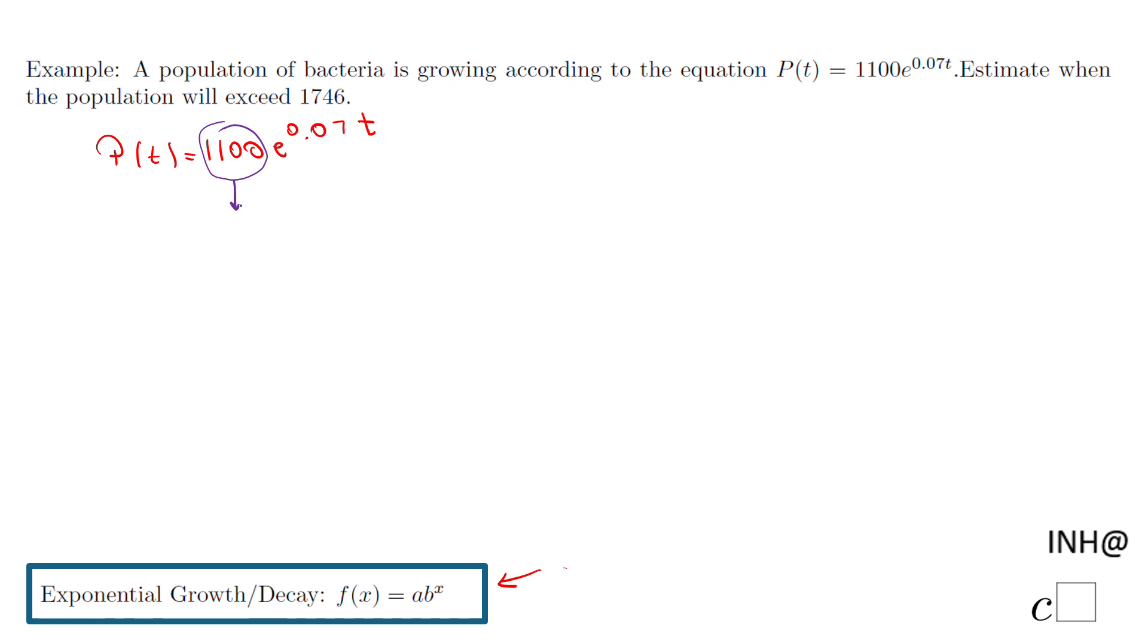If you want to call that P sub 0, how do we know that? You make t equal 0, and if you get that t equal 0, that's what you end up with. So this is the initial population.